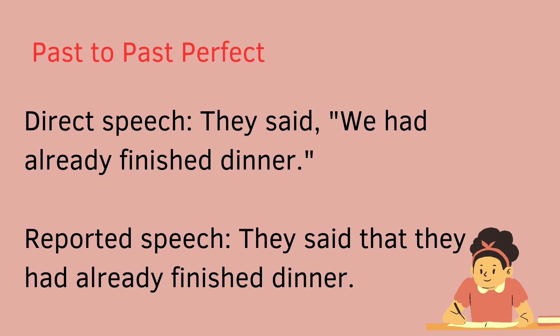Past to past perfect: for past tense, it usually changes to past perfect in reported speech, to show that the action happened before something else in the past. For example, direct speech: they said, 'We had already finished dinner.' Reported speech: they said that they had already finished dinner.